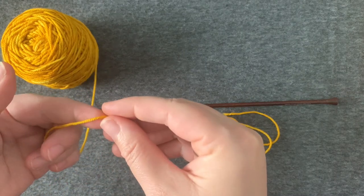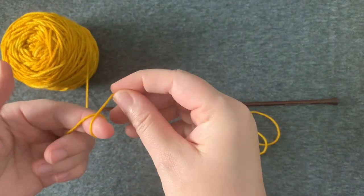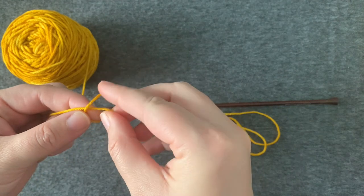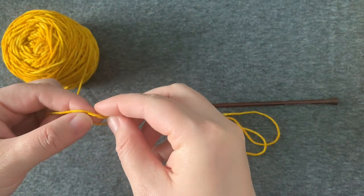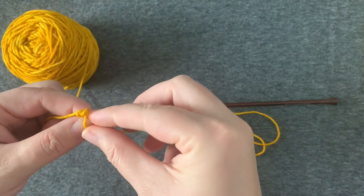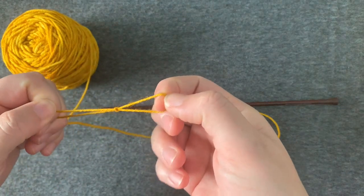Next, you're going to make a slipknot. So you're going to bring your yarn around your finger and push a little bit through the loop, and pull that tight.